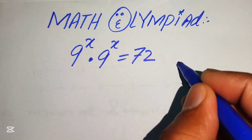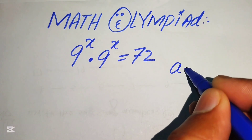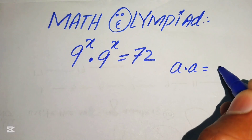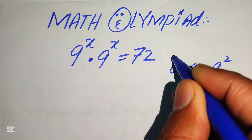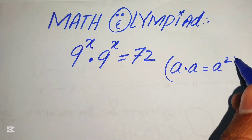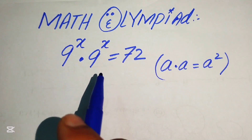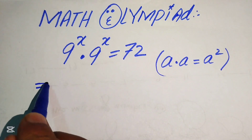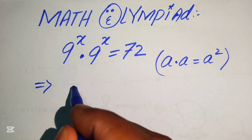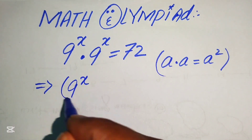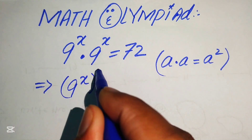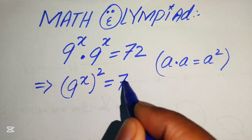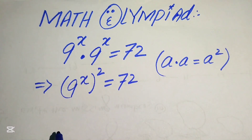First, we know that if you have a multiplied by a, we write it as a squared. According to this rule, we write 9x multiplied by 9x as (9x) whole squared, and it equals 72.